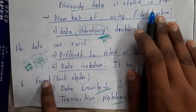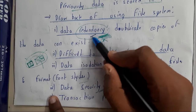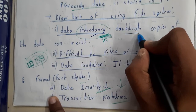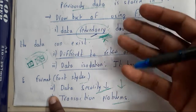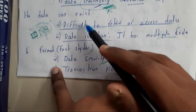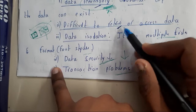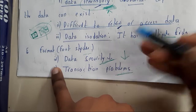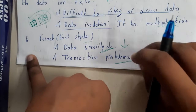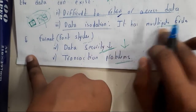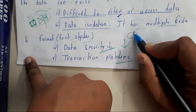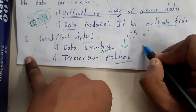The drawbacks of file system include data redundancy — which is nothing but having duplicate files — and similarly, retrieving data is really slow. Access of data is really tough in normal files, and there is data isolation, where we have different formats like text files and doc files.